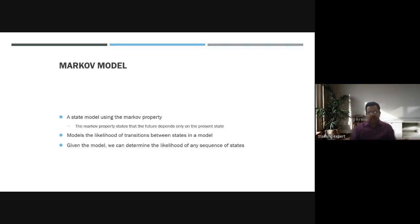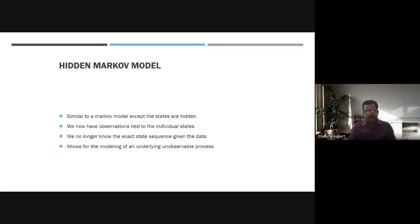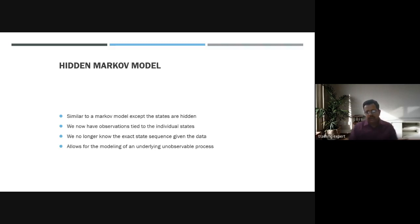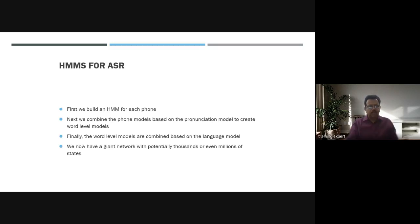That is the underlying factor of the Markov model — it models the likelihood of transitions between states. Given the model, we can determine the likelihood of a sequence of states. In the Hidden Markov Model, similar to the Markov model except the states are hidden. We now have observations tied to individual states, and we no longer know the exact state sequence.